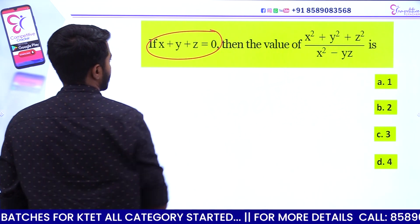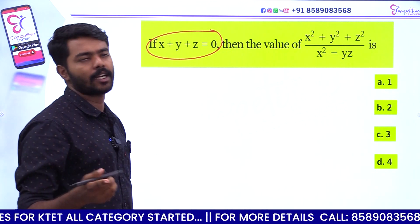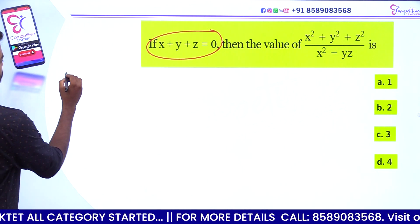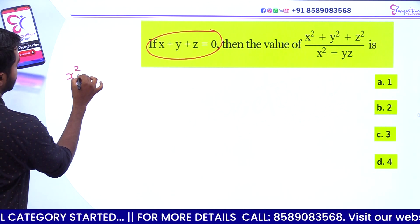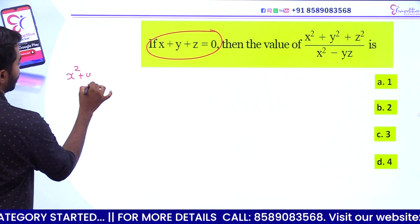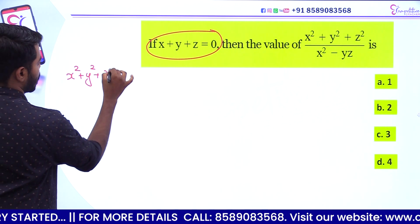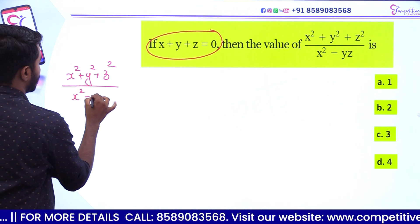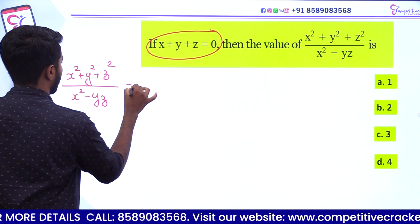This is our condition. What we want to see is x² plus y² plus z² divided by x² minus yz.